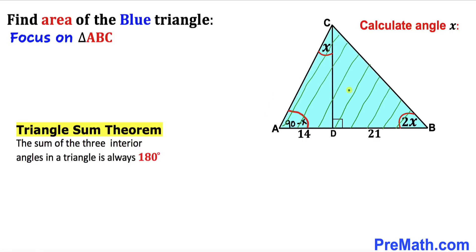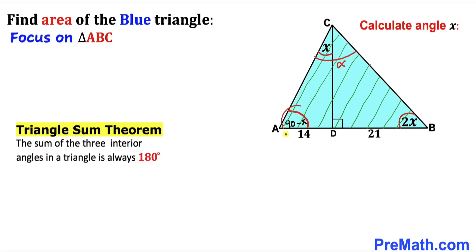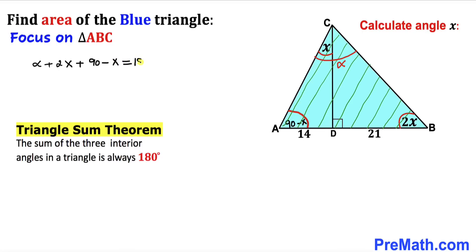Now let's focus on the big triangle ABC and recall the triangle sum theorem once again. The sum of all three angles in triangle ABC must be 180 degrees. Calling the whole angle at vertex A as alpha, we write: alpha plus 2x plus (90 minus x) equals 180 degrees.